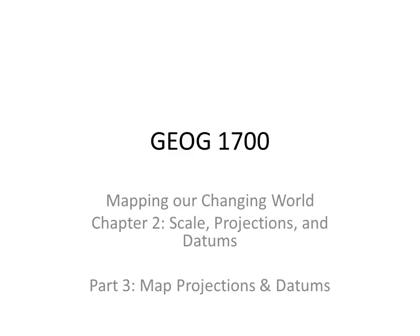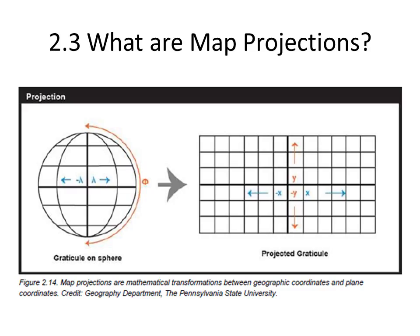In this section of the chapter, we'll look a bit more in detail at map projections. Here we see a representation of a map projection. This is a very simplified map projection, which basically represents a mathematical transformation between the geographic coordinates and plane coordinates, and that would be an example of a projected graticule.